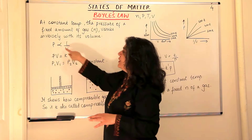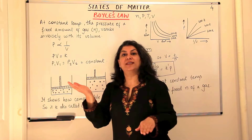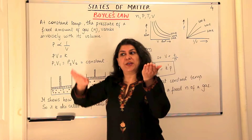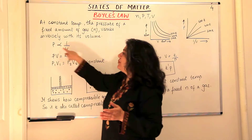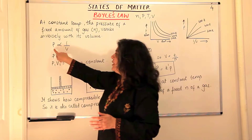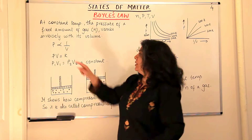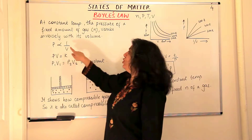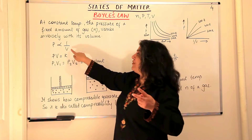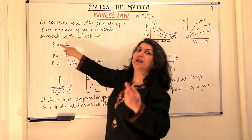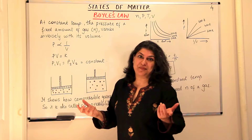Pressure is inversely proportional to volume, which means if the pressure goes up the volume goes down, and if volume goes up pressure goes down. In other words, the product of pressure and volume remains the same — for example, if pressure is 2 and volume is 4, the product is 8; if volume becomes 2, pressure becomes 4, and the product of 2 × 4 remains the same.